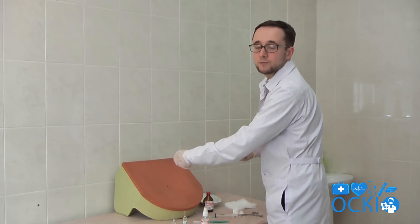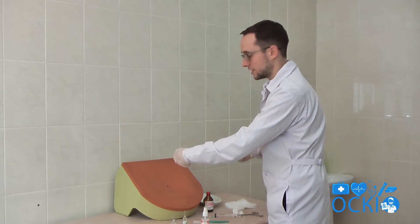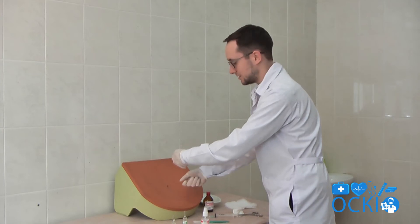Pierce the abdominal wall by trocar. Remove the stylet.